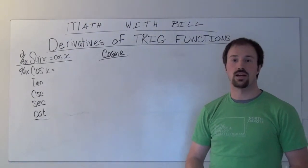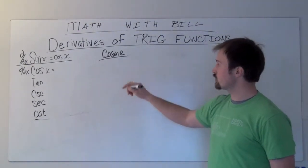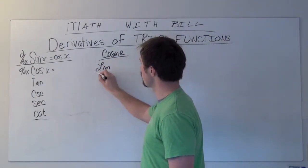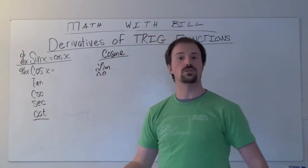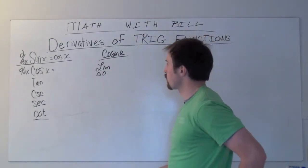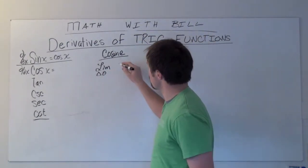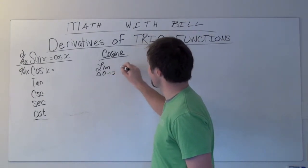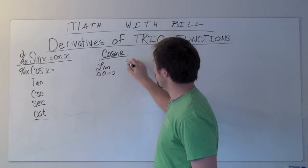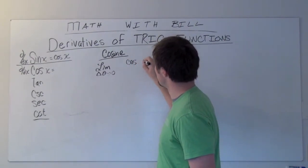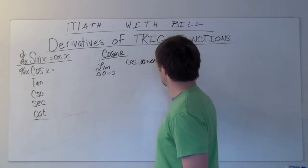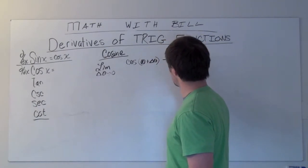The cosine function—to do a limit derivative, we're going to take the limit as the change in theta (which is usually the angle that we work with in trigonometry) approaches zero, of the quantity cosine of (theta plus delta theta) minus cosine theta, all divided by delta theta.